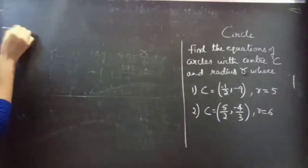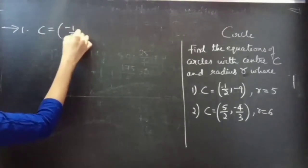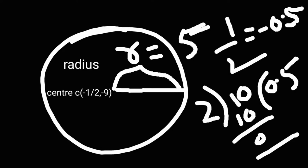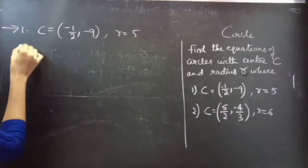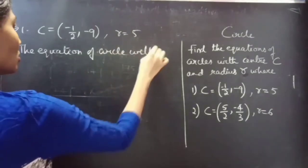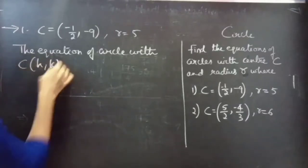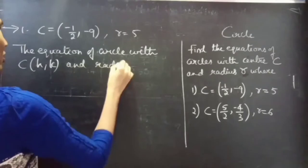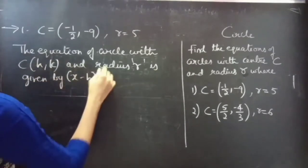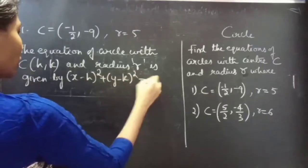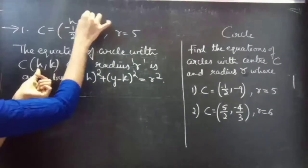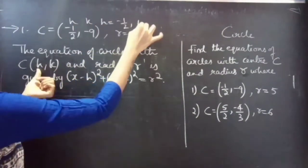Solution. First one: given center is the ordered pair (-1/2, -9) and radius 5. We know that the equation of a circle with center H, K and radius R is given by (x - H)² + (y - K)² = R². So we have H = -1/2 and K = -9.